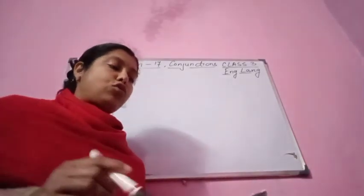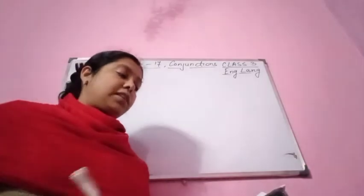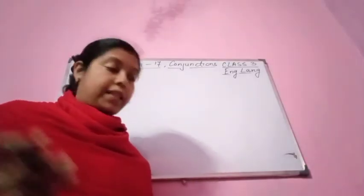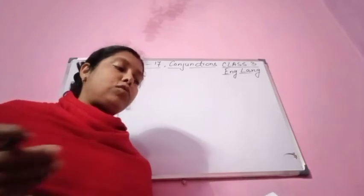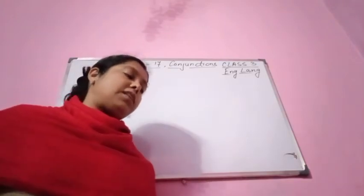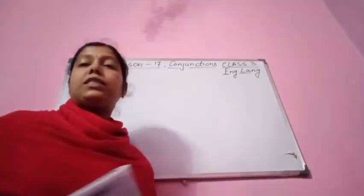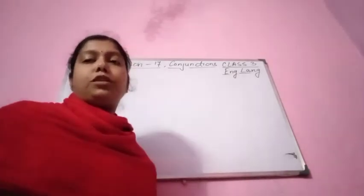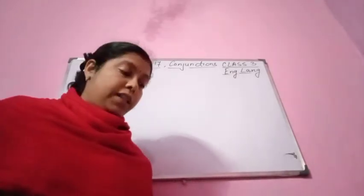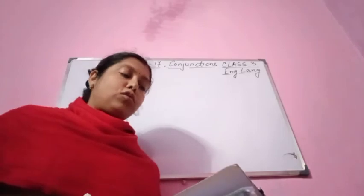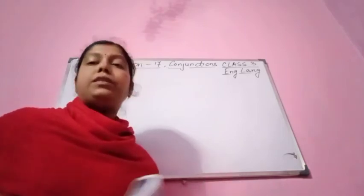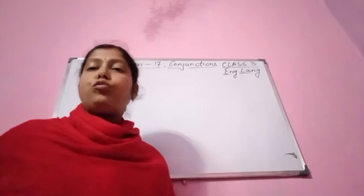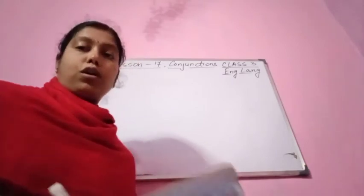The conjunction 'and' is used to join words or sentences that are similar. The conjunction 'but' is used to combine words or sentences that are opposite or in contrast with each other. The conjunction 'or' is used to combine words or sentences that express a choice — where we have to select or choose something.